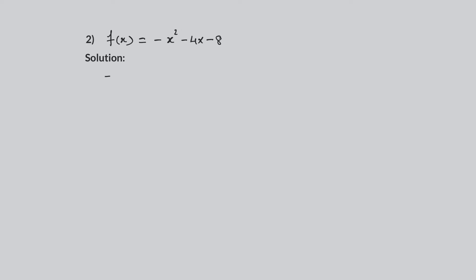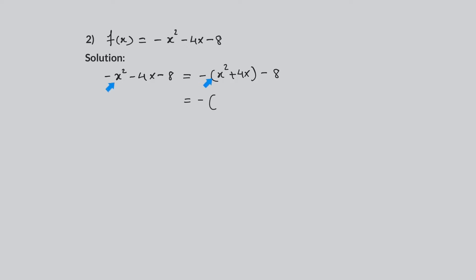Given function f of x equals negative x squared minus 4x minus 8. We write this function in vertex form by taking negative 1 as a common factor between the first two terms, as shown here, which gives negative 1 times x squared plus 4x, minus 8.